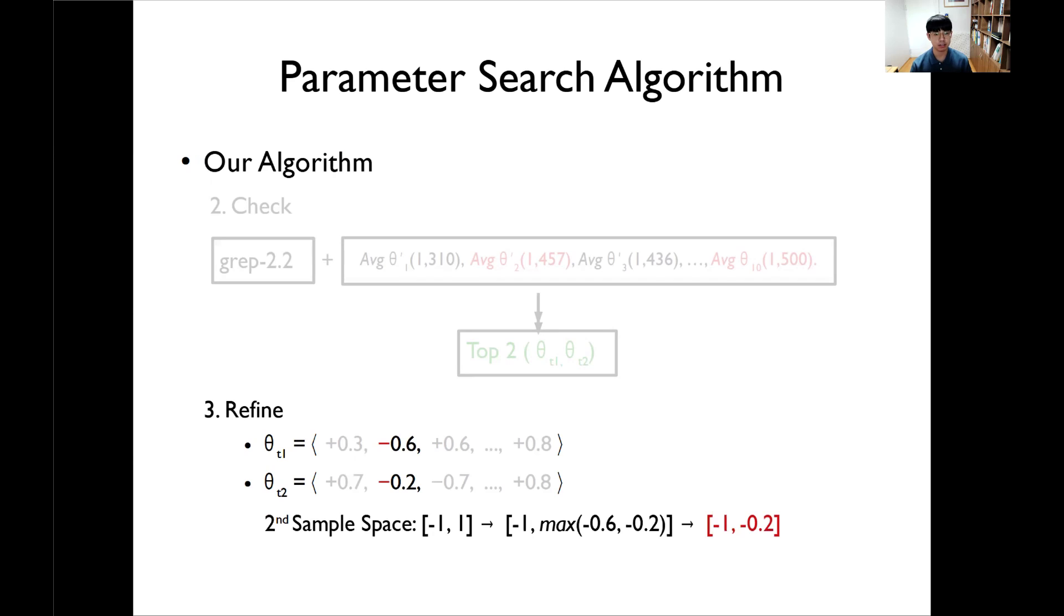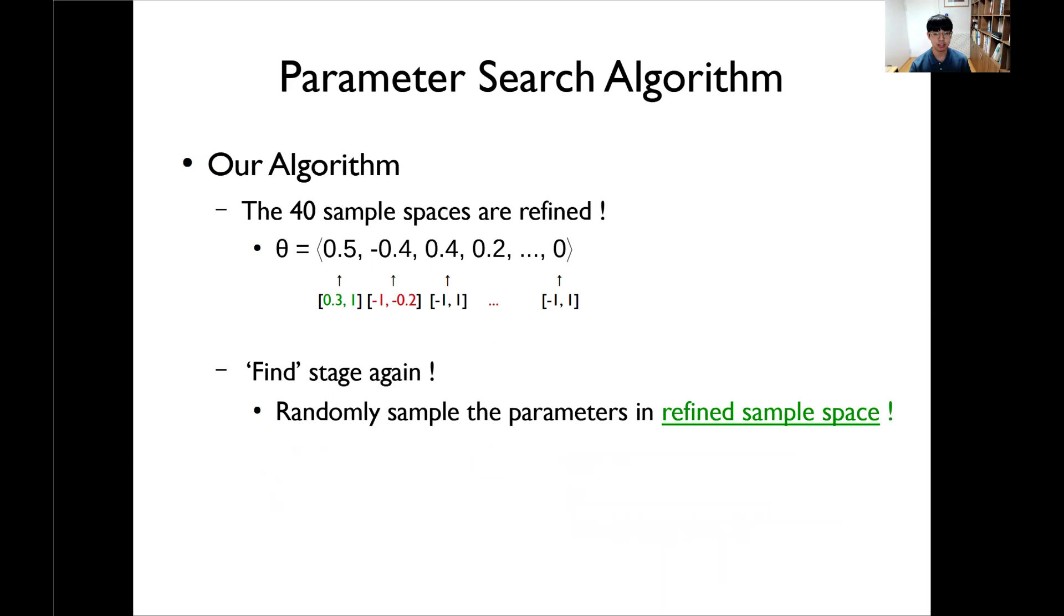And look at the second sample space. In this case, these values are all negative, so we negatively refine the sample space. The second sample space is changed as the real number between minus 1 to minus 0.2. When the sign of two values is different, we do not refine the sample space. After refining each sample space, we start the find stage again. But in this time, we randomly sample the parameter in this refined sample space. In this way, we iteratively refine each sample space and guide the search to continuously find optimal parameters.